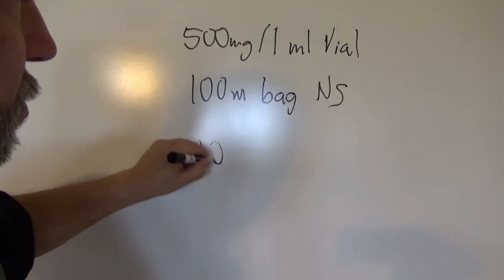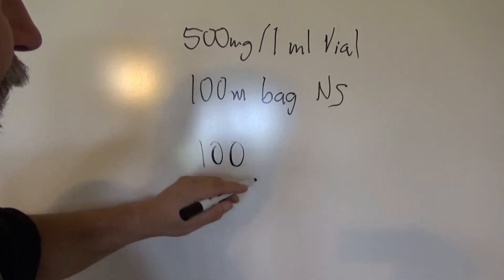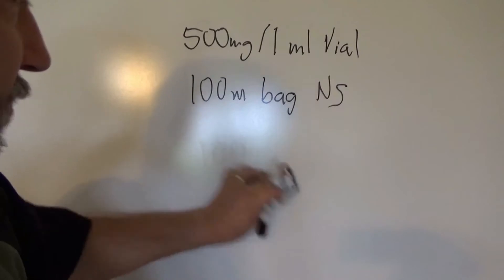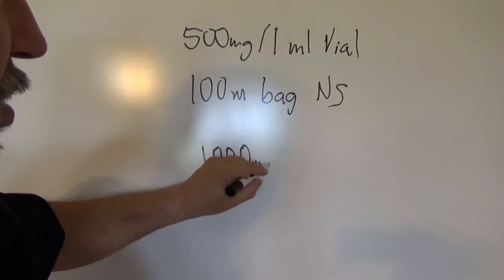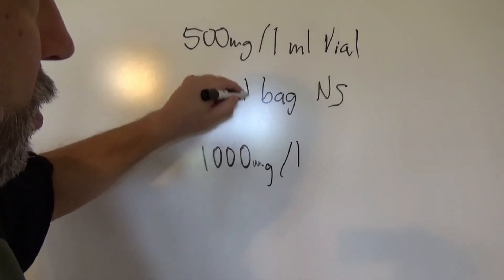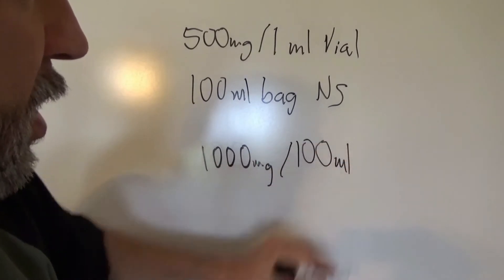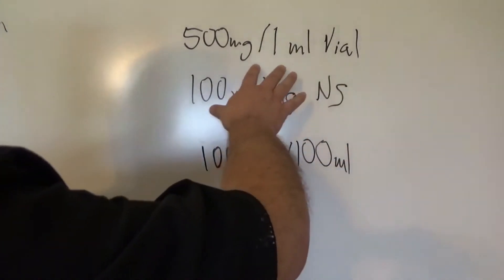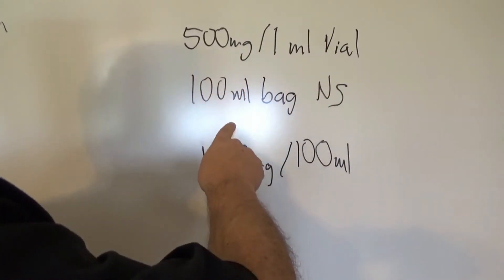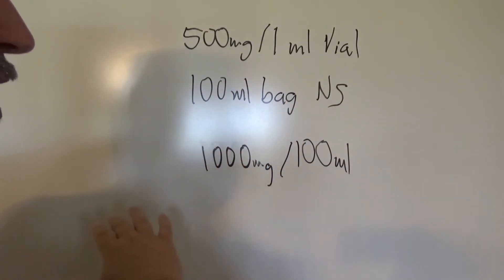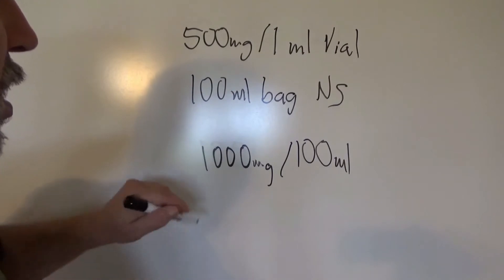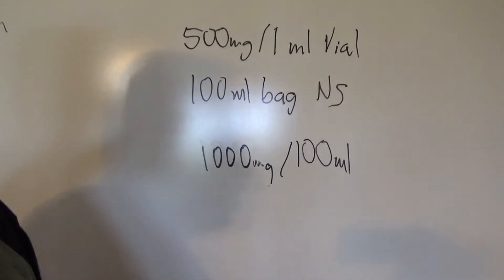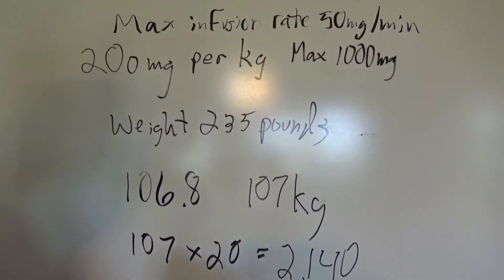Taking out two milliliters brings you down to 98 milliliters, then you put the two milliliters of medicine back in. So you still have 100 milliliters in the bag. We have 1000 milligrams in 100 milliliters. You took two milliliters — which is 1000 milligrams — out, put the medicine in, so the bag is still 100 milliliters. Now we have a concentration of 1000 milligrams in 100 milliliters.